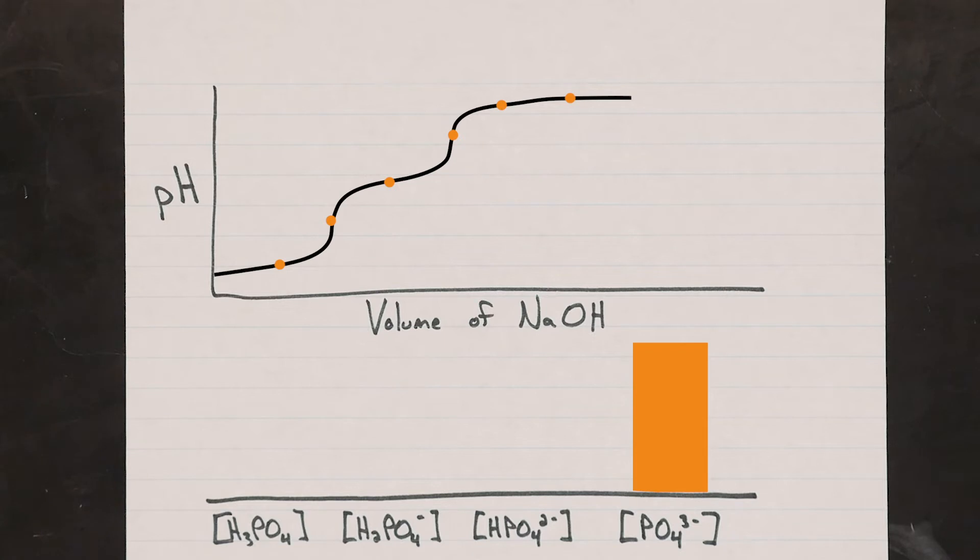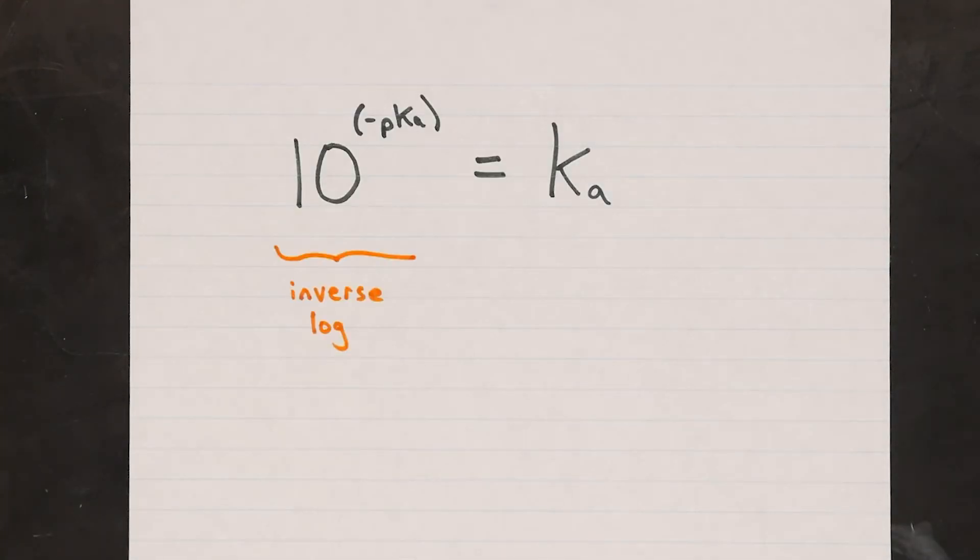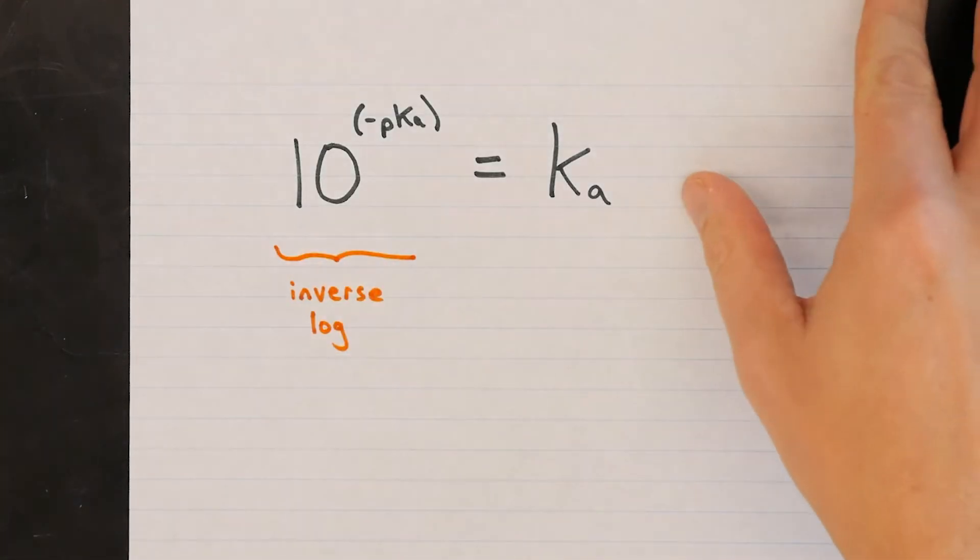So, to figure out our acid strengths for each of the phosphoric acid and dihydrogen phosphate, we simply need to plot our data and find those half-neutralization points, since we know that pH is equal to pKa at these points. All we'll need to do is calculate the inverse log of the pKa to get the Ka, and we're done.